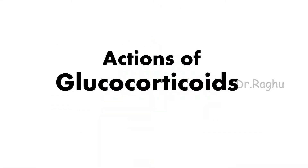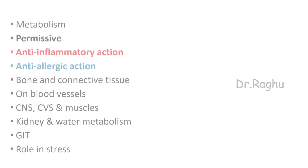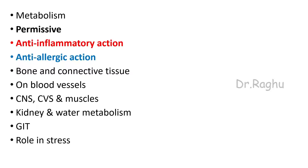Next, let's understand the actions of glucocorticoids. There are many actions: action on metabolism, a permissive action, anti-inflammatory and anti-allergic action, actions on bone and connective tissue, blood vessels, central nervous system, cardiovascular system, muscles, kidney and water metabolism, action on the GIT, and importantly it is an anti-stress hormone. Let's start with the actions on carbohydrate metabolism.